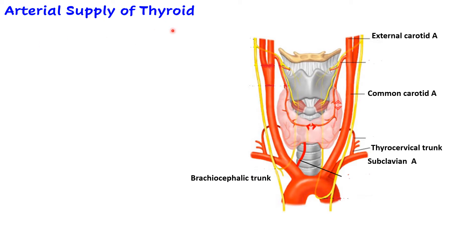Let us begin with the arterial supply of thyroid gland. Here we can see the arch of aorta, the brachiocephalic trunk, the left common carotid, and the left subclavian artery. The brachiocephalic trunk on the right side divides into right common carotid and right subclavian artery. The common carotid artery at the upper border of the thyroid cartilage divides into external carotid and internal carotid arteries. A branch of subclavian artery is known as the thyrocervical trunk.